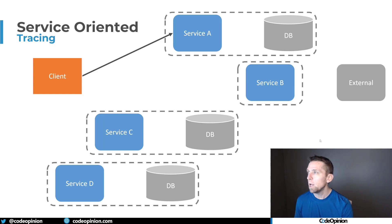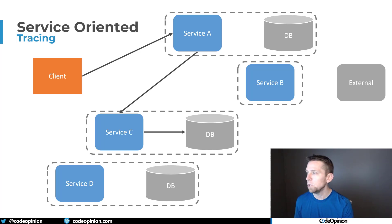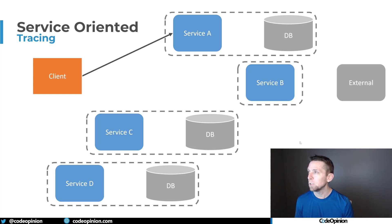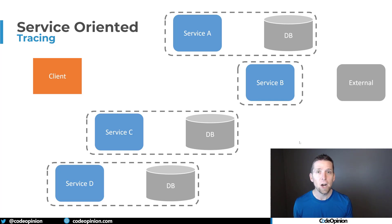Continuing on: service A also calls service C. We expect it does something within its service boundary, but do we know that service C is also calling service D, which makes a call to its database? And then everything flows all the way back up to the client. In this environment, we have no visibility into how all these calls are made from service to service.